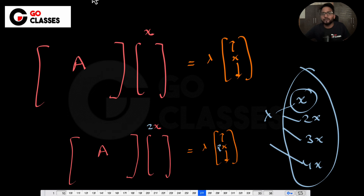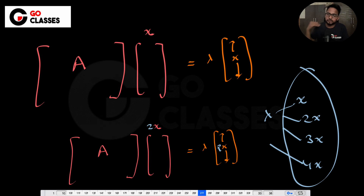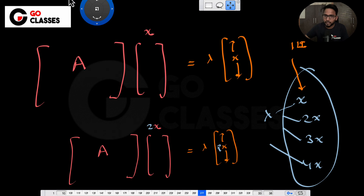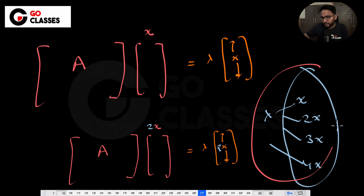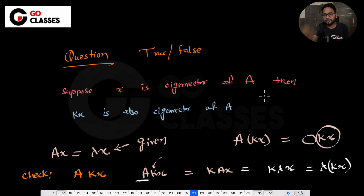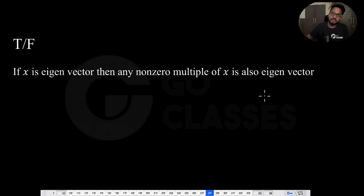So we will not be interested in how many eigenvectors there are, because there are always infinitely many. We will be interested in how many are linearly independent eigenvectors. If x is eigenvector then kx is also eigenvector. And if x is eigenvector then any non-zero multiple of x is also an eigenvector — this is true.